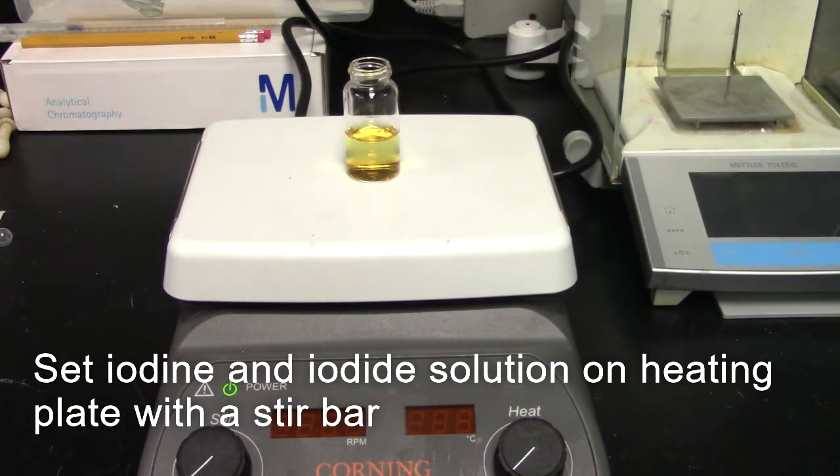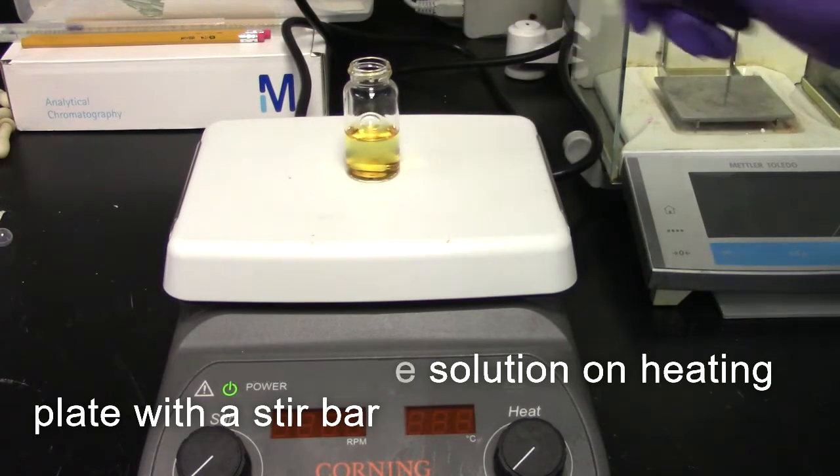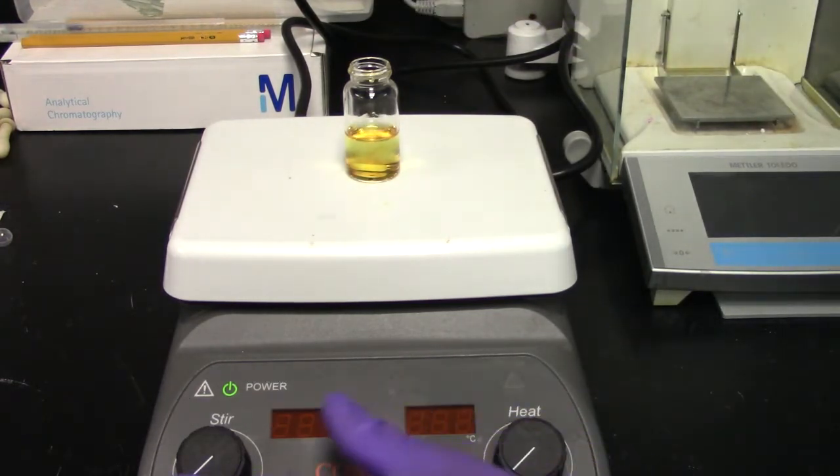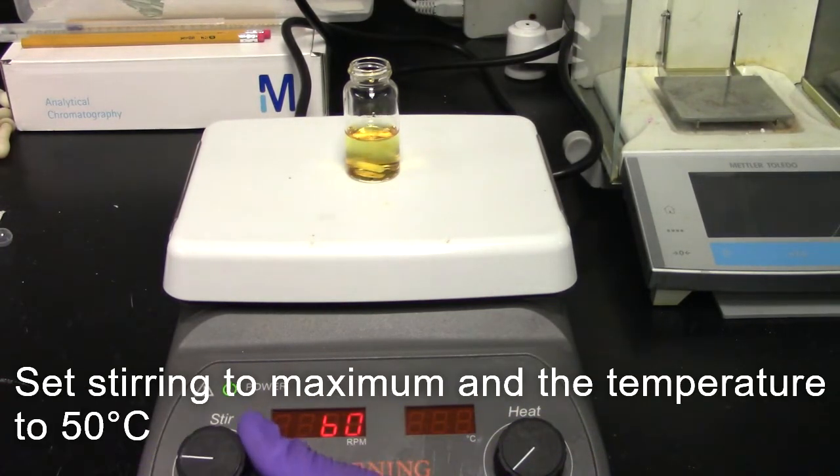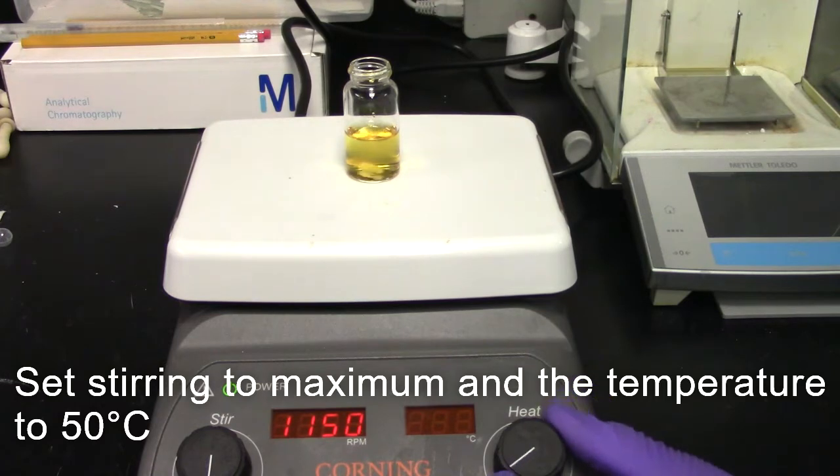Set the iodine and iodide solution on a heating plate and place a stir bar into the vial. Set the stirring setting to maximum and a temperature of 50 degrees centigrade. Carefully warm and stir the mixture.